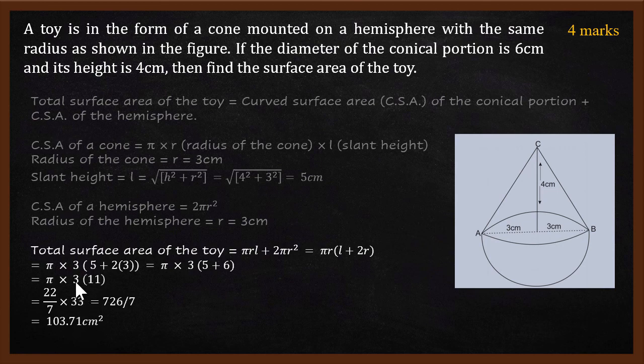This is a quite straightforward calculation. Once you find the value of slant height, and once you know the curved surface area of the cone equation, and if you know the formula for curved surface area of the hemisphere, you will be able to do this.